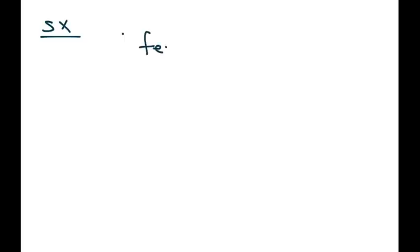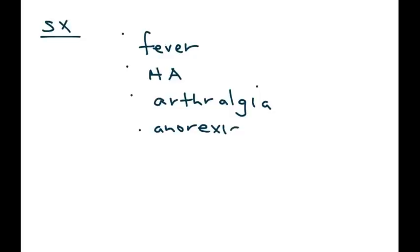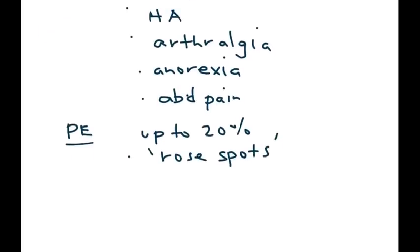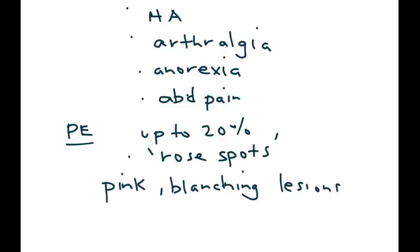If somebody develops typhoid fever, the symptoms are very general: fever, headache, and arthralgia. The patient will not want to eat anything and will experience abdominal pain. During physical exam, in up to 20% of patients you can see a rather characteristic rash known as rose spots.